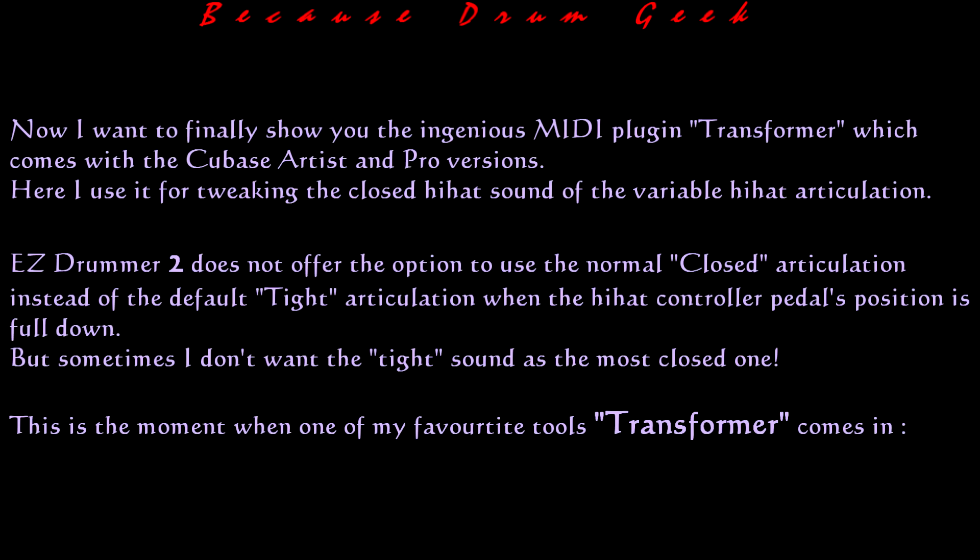Now I want to finally show you the ingenious MIDI plugin transformer, which comes with the Cubase Artist and Pro versions. Here I use it for tweaking the closed hi-hat sound of the variable hi-hat articulation. EZ Drummer 2 does not offer the option to use the normal closed articulation instead of the default tight articulation when the hi-hat controller pedal's position is full down.